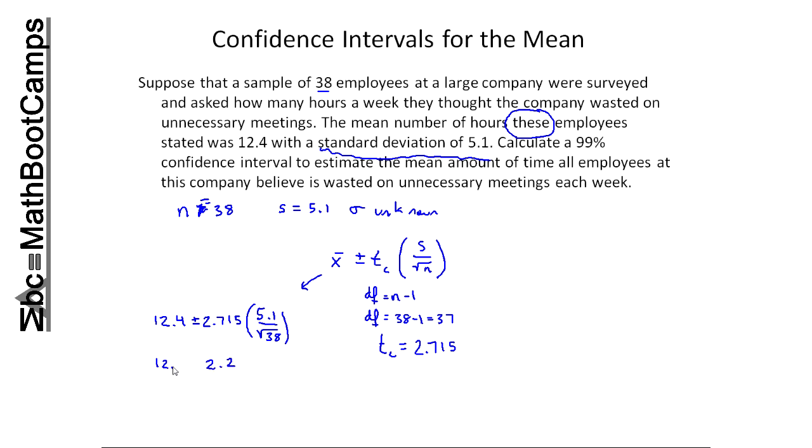So we got 12.4 plus or minus 2.2. This is one way we could list the confidence interval, but the other way is to actually calculate these out. What's 12.4 minus 2.2, and what's 12.4 plus 2.2? Here I'm going to get 10.2, and down here I'm going to get 14.6. And so I end up with the interval 10.2 up to 14.6.